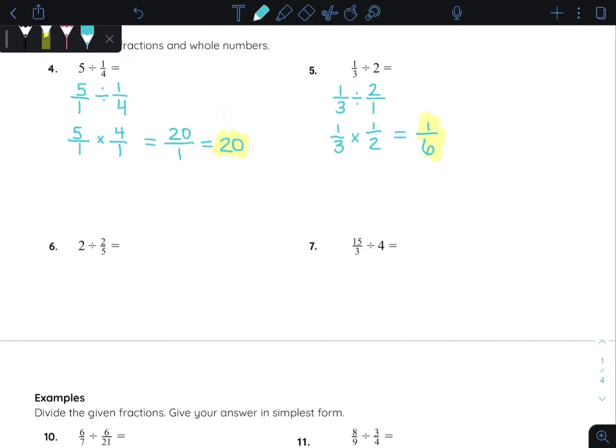Number six. Put a one under that two. It doesn't change the value. Keep it, change it, flip it. Two times five is ten. One times two is two. Ten divided by two. Remember, fractions mean division. That's just five.